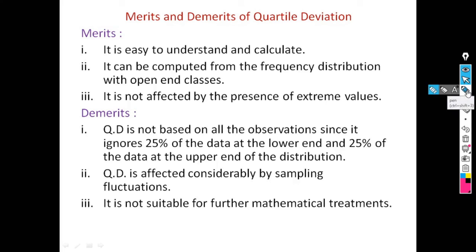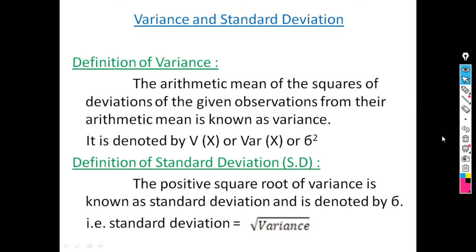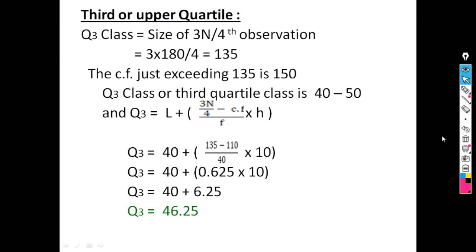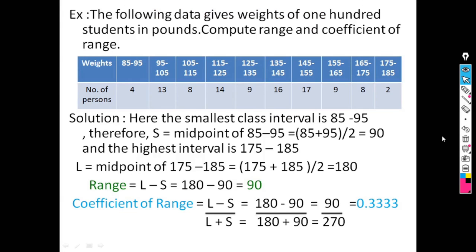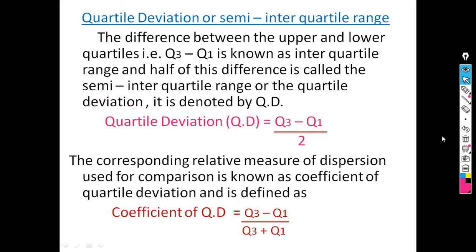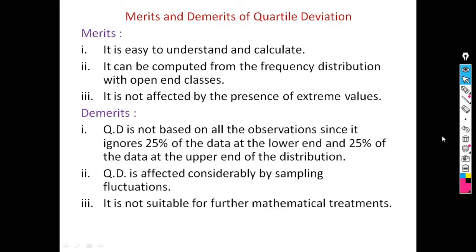In today's lecture, we saw that range is defined as L minus S, that is largest observation minus smallest observation. The next measure of dispersion is quartile deviation, also known as semi-interquartile range, defined as QD equals (Q3 minus Q1) divided by 2. The coefficient of range is (L minus S) divided by (L plus S), and the coefficient of quartile deviation is (Q3 minus Q1) divided by (Q3 plus Q1). In the next lecture, we will continue with our next topic. Thank you.